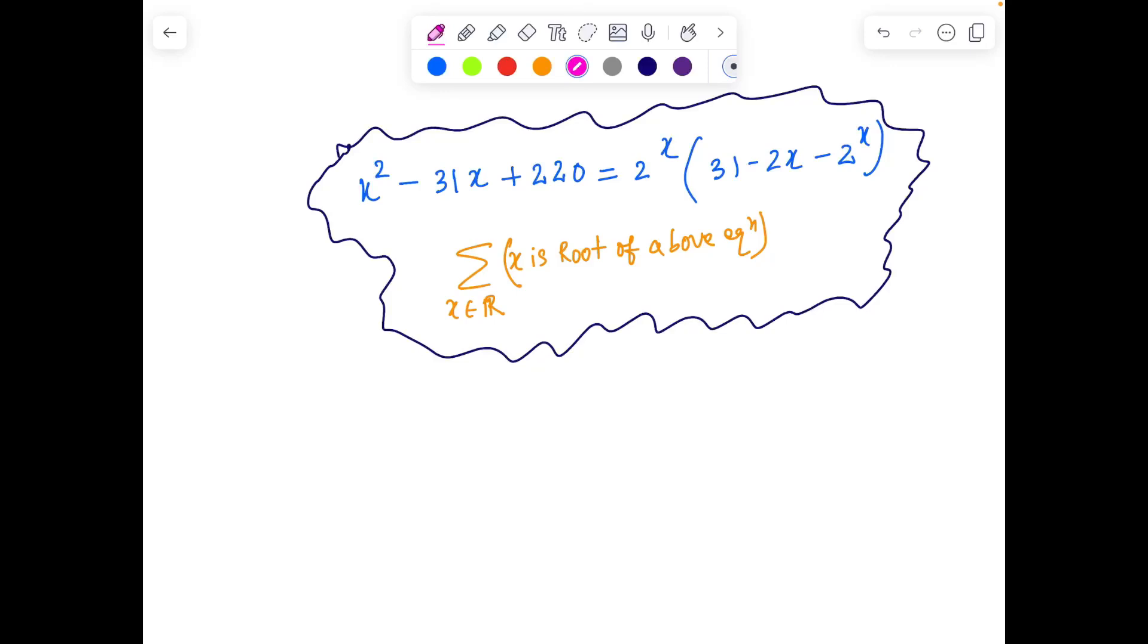Good morning all of you, let's see how we can solve this question. Well, let's see the question first. We have a quadratic expression in LHS. 31 into 20 looks not so good. But RHS is 2 to the power X, it's 2 to the power X in this.